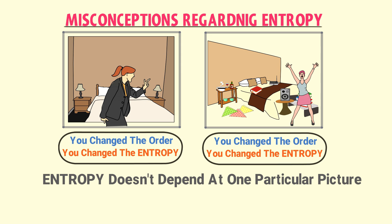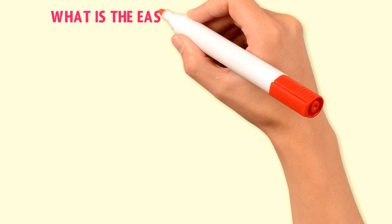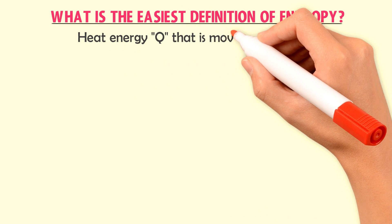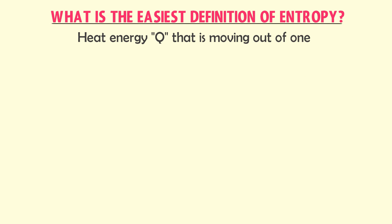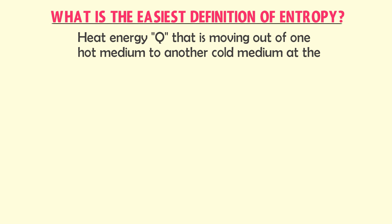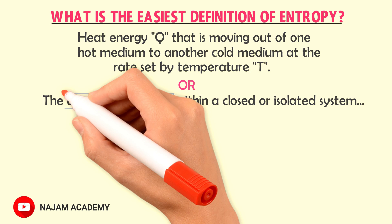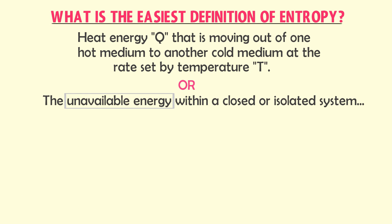Over time the state of the system changes due to many factors, thus entropy also changes. Personally, I define entropy as the heat energy Q that moves out of one hot medium into another cold medium at the rate set by temperature T. The second standard definition: the unavailable or unusable energy within a closed or isolated system is known as entropy.